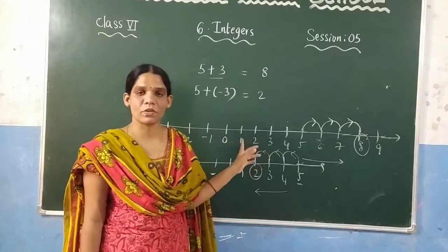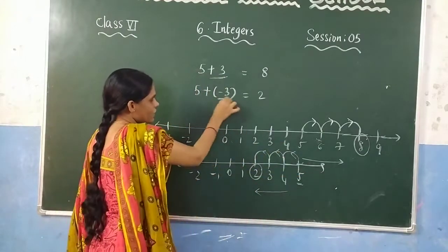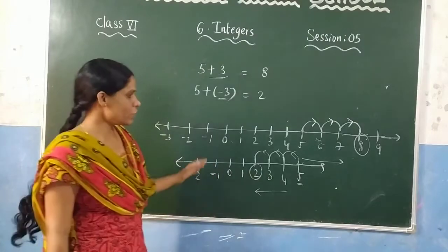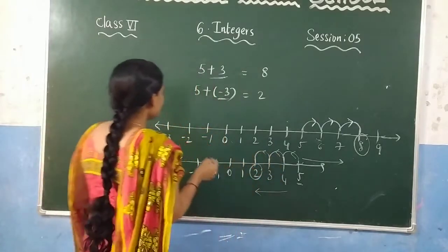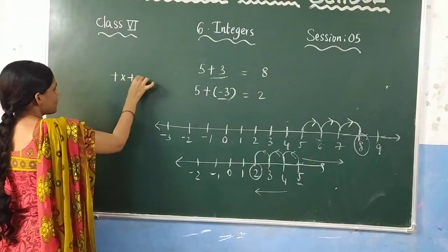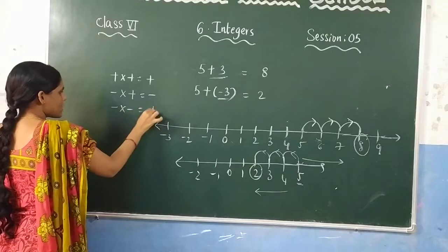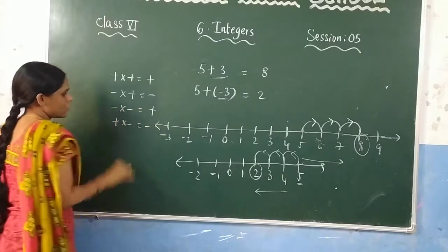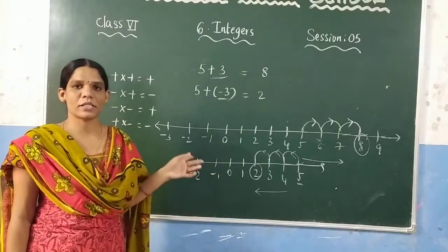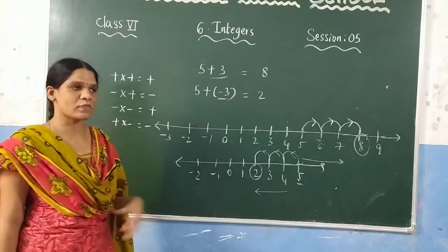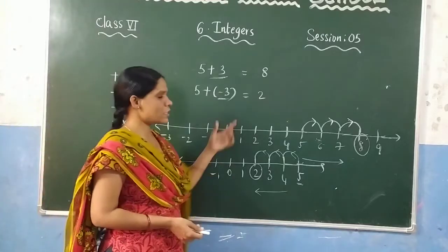To summarize: while adding two integers, if you are adding a positive integer you need to go to the right side, and if you are adding a negative integer you need to go to the left side. Also remember the sign rules: plus times plus is always plus; minus times plus is minus; minus times minus is plus; plus times minus is minus.